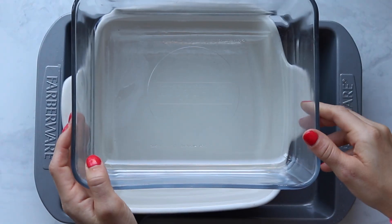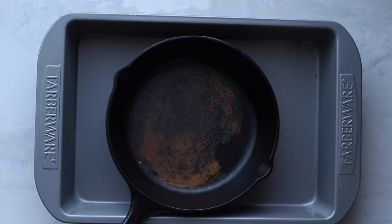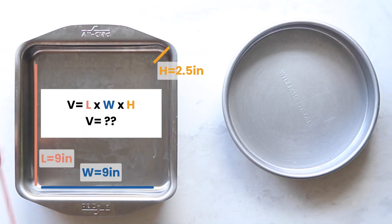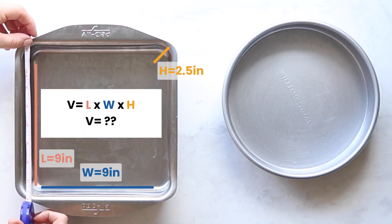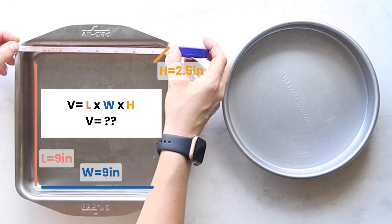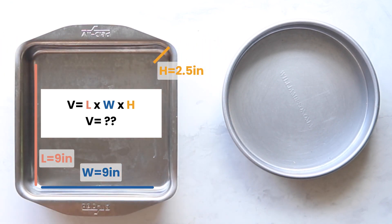Now let's talk about conversions to any pan. We recommend using metal to keep it consistent with material. First, you need to get the volume of the pan by measuring the length, width, and height of the pan and multiplying those three to get the overall volume.